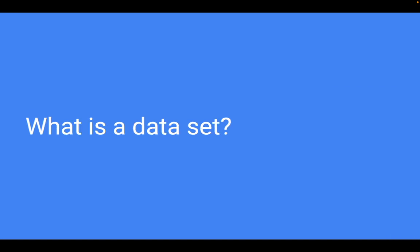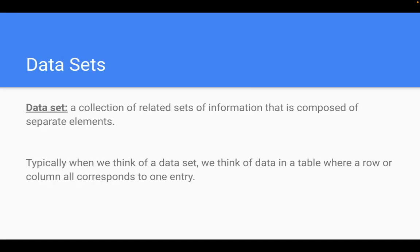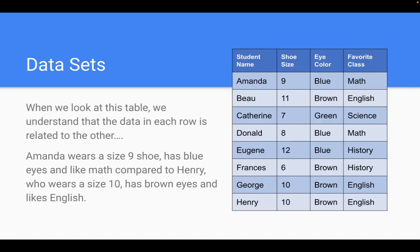Alright, so let's go back and review what a data set is. A data set is simply a collection of related information that is composed of separate elements. So typically when you think of a data set, we think of a table where a row or column all corresponds with one entry, which for the most part will serve our purpose. That's the type of data set we're going to look at here.